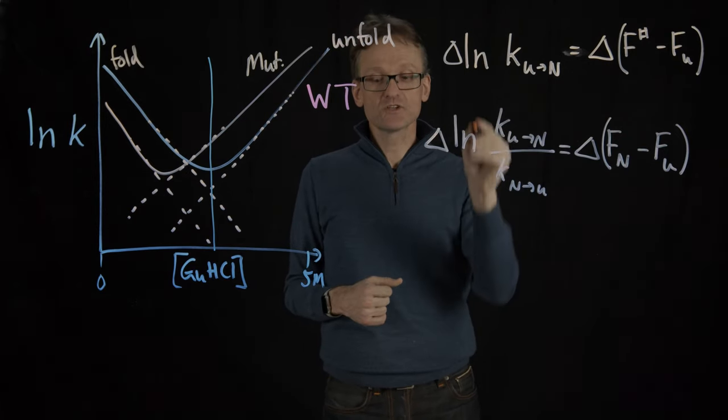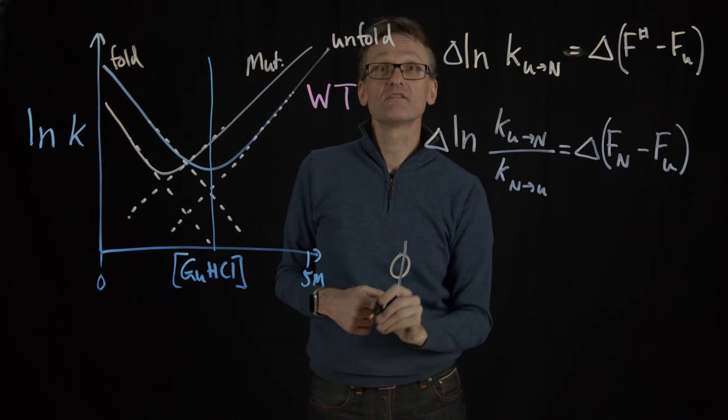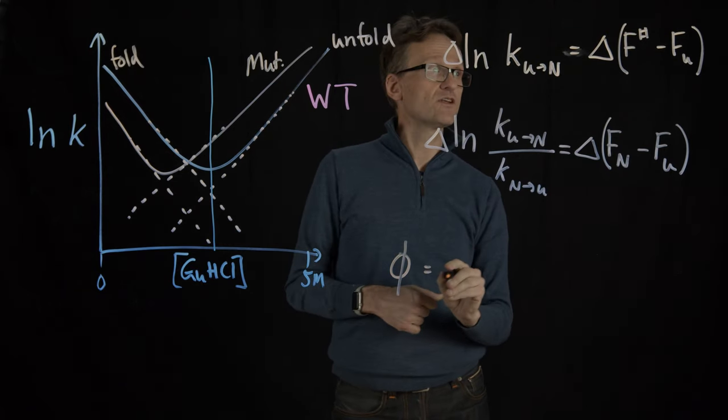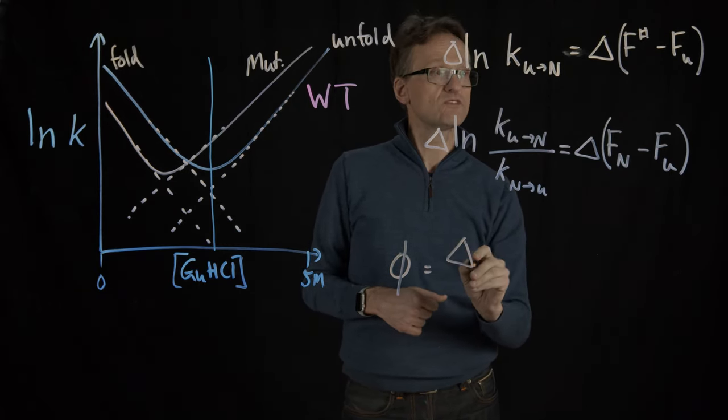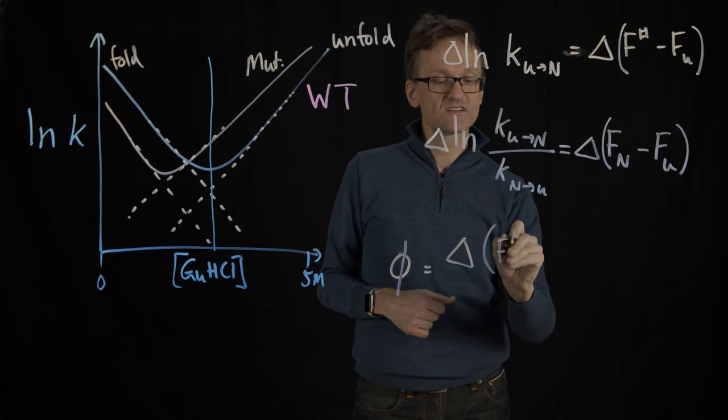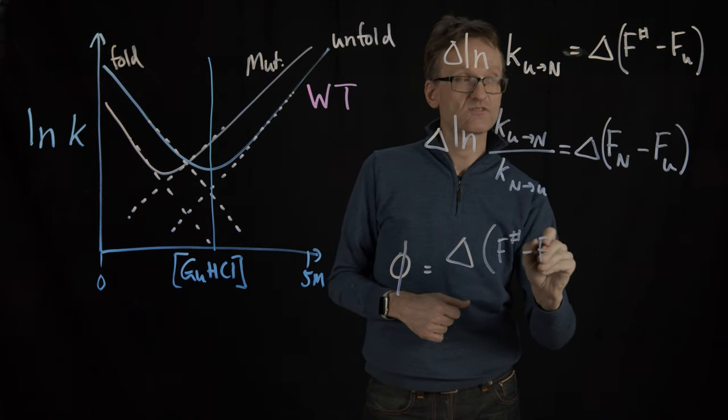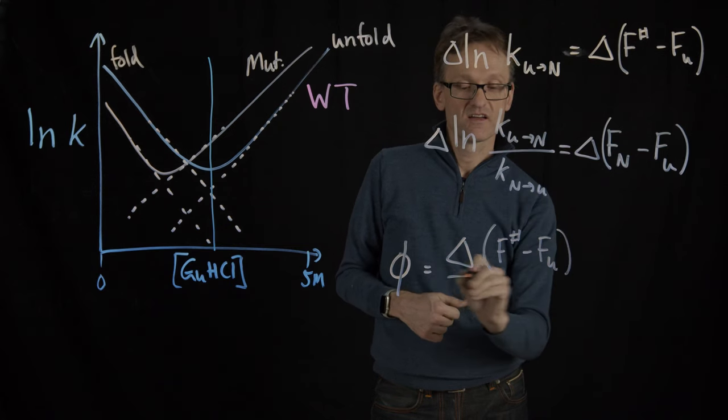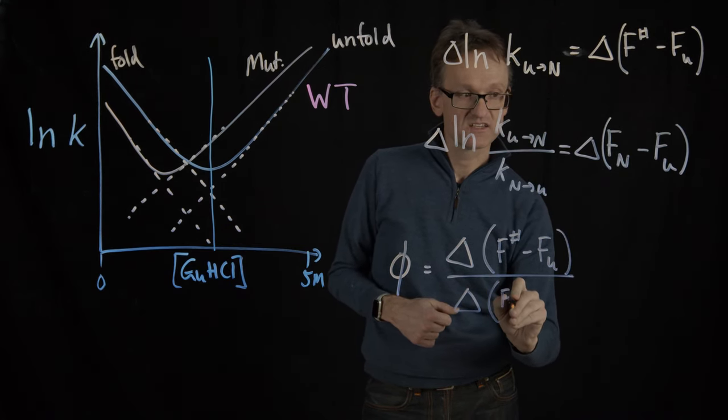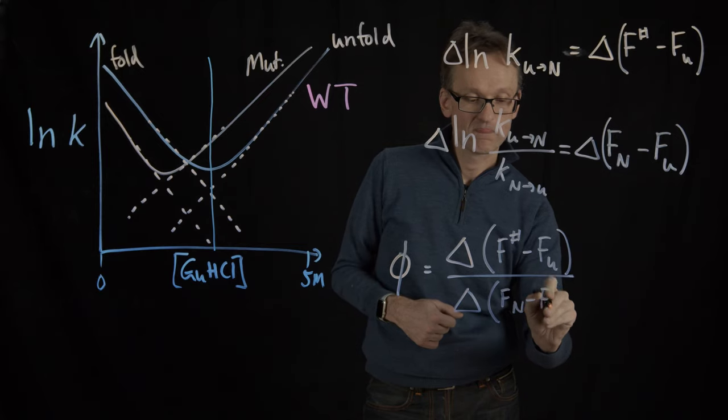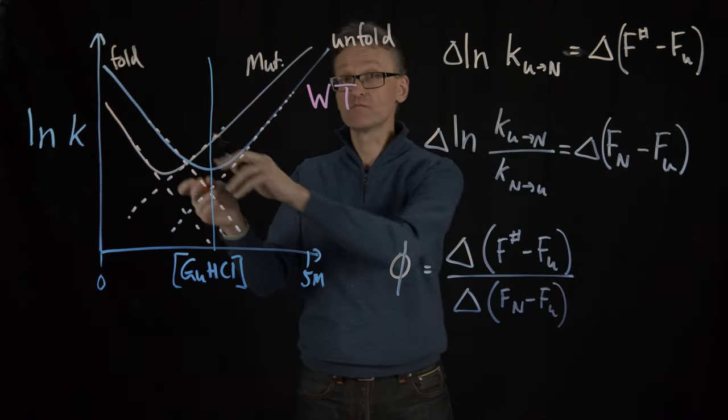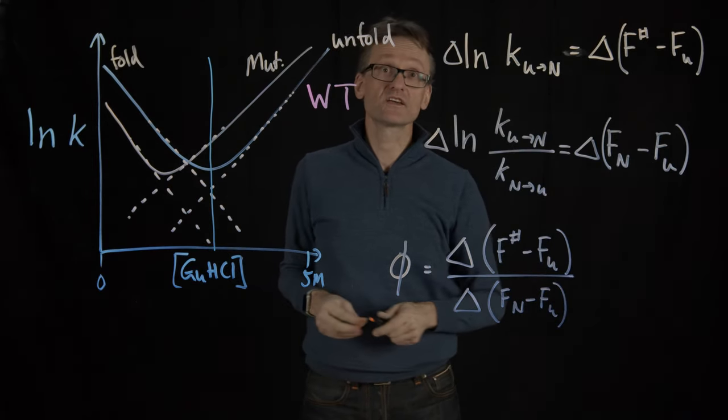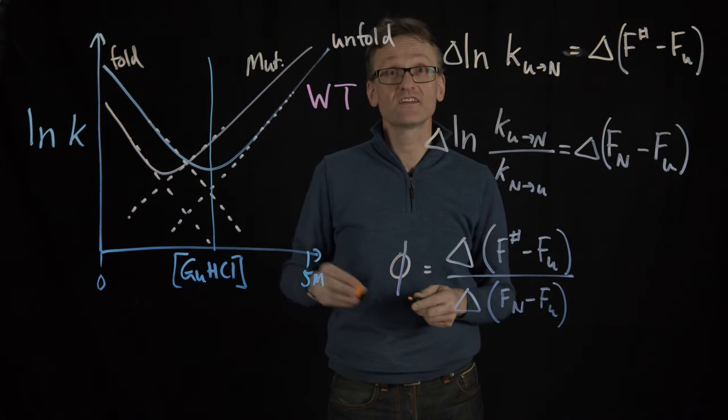So just by taking the quotient of these we end up with something called a phi value. So the phi value is literally the quotient between the difference of the transition state barrier divided by the change in stabilization. And the idea is that you get both of them just by measuring things in the chevron plot when you have systematic differences here.